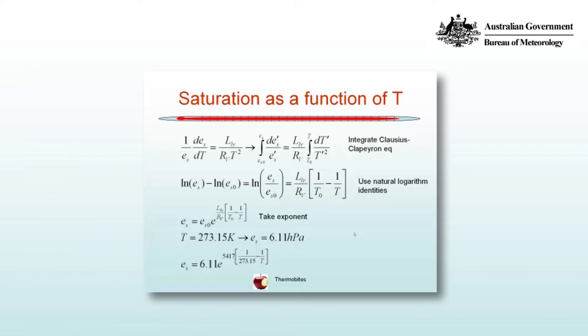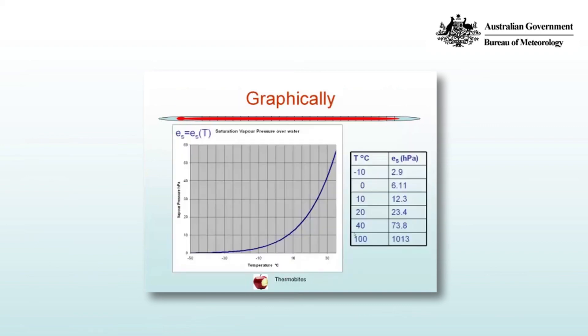As the temperature increases, we can see that the saturation vapour pressure will also increase. And that's shown in this plot here. At 0 degrees, the saturation vapour pressure is 6.11 hPa. And at 100 degrees Celsius, the saturation vapour pressure is 1013 hPa, which is approximately equal to the normal atmospheric pressure, which is why water boils at 100 degrees Celsius.